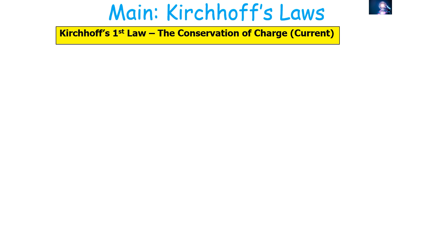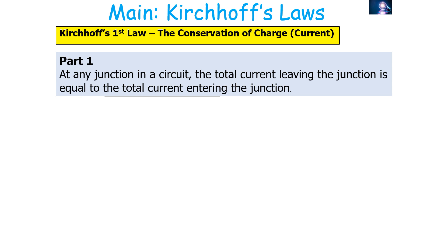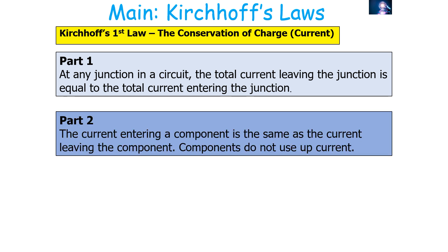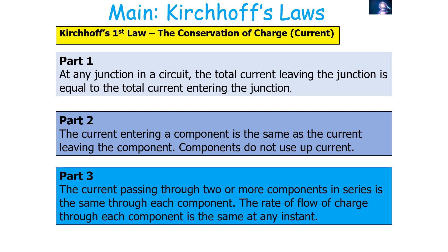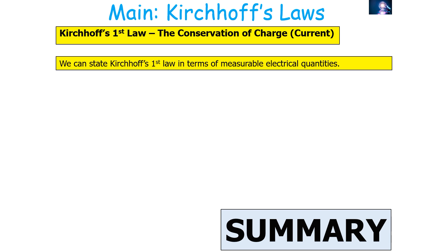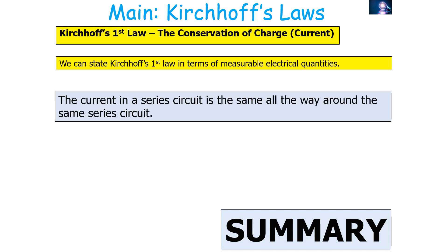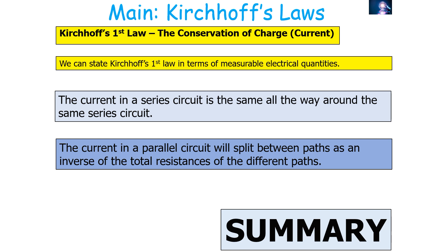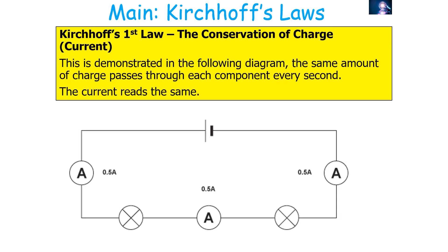We assume the circuit wire is completely uniform — there is no special place in the wire. To clarify Kirchhoff's first law: at any junction, total current leaving equals total current entering; the current entering a component equals the current leaving it; and the current through series components is the same through each. In a series circuit, current is the same all the way around. In a parallel circuit, current splits between paths as an inverse of the total resistances of each path, as demonstrated in the diagram.